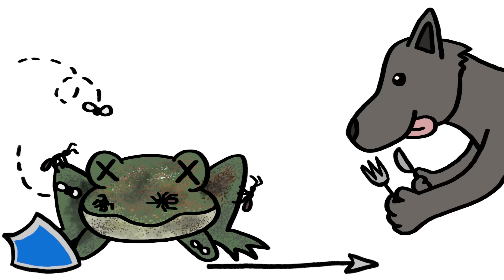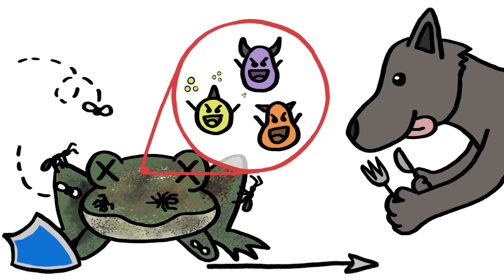To deter bigger carnivores in search of a meal, some feasting microbes produce toxins like anthrax and botulinum, tiny doses of which are fatal to much of the animal kingdom.